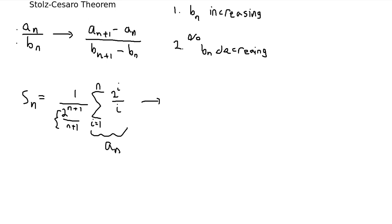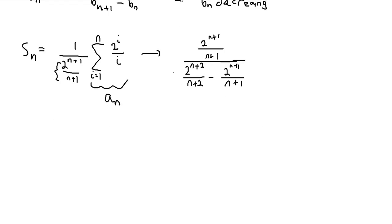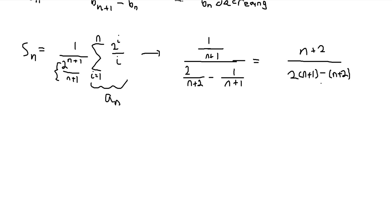So a_{n+1} minus a_n would just be 2^{n+1} / (n+1). And b_{n+1} would be 2^{n+2} / (n+2). So we have b_{n+1} minus b_n. We can divide out by 2^{n+1} in the numerator and denominator, then multiply by (n+1) and (n+2). The final expression clearly approaches 1. So the answer to this limit is 1.